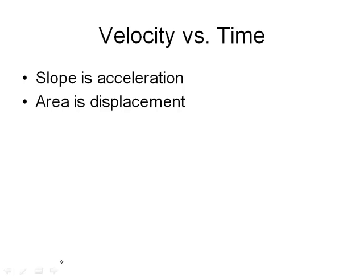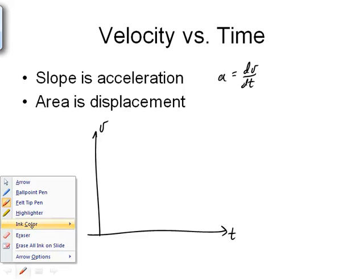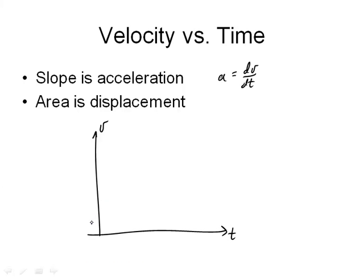Velocity versus time graph will do similar things for us. Time along the horizontal axis, velocity along the vertical. Remember acceleration is the derivative of velocity with respect to time. And so if I have a graph here of velocity versus time, then the slope at any point is the acceleration.